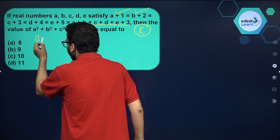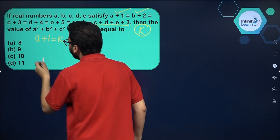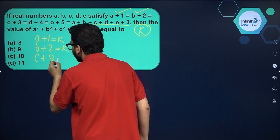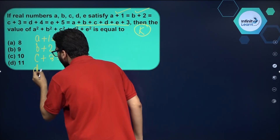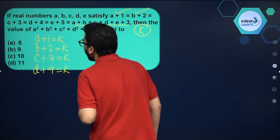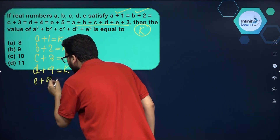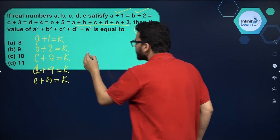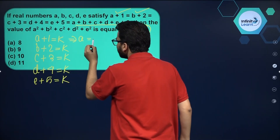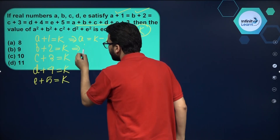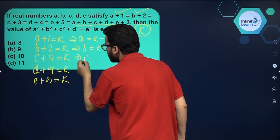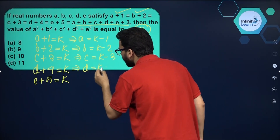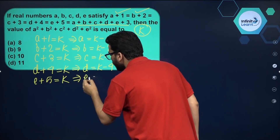From here I can say that a + 1 = k, b + 2 = k, c + 3 = k, d + 4 = k, and e + 5 = k. So writing each variable in terms of k: a = k − 1, b = k − 2, c = k − 3, d = k − 4, and e = k − 5.